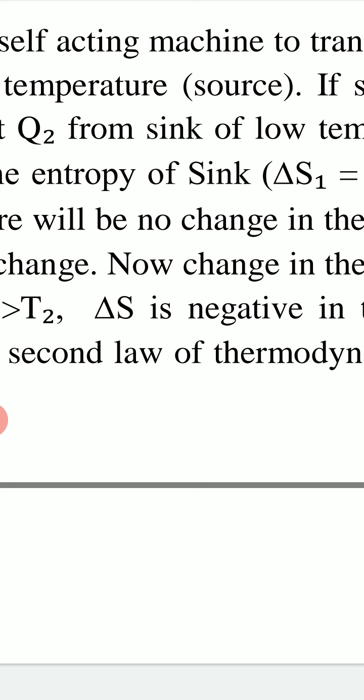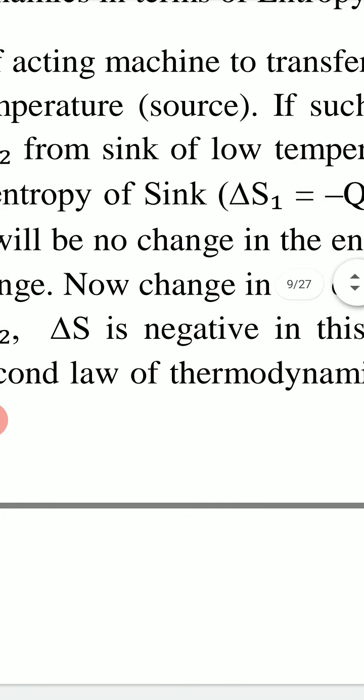If we assume the Clausius statement is wrong, such a machine is possible which extracts Q2 heat from a sink at low temperature T2 K and gives this Q2 heat to a source at high temperature T1 K, with no external work done on it. This means Q2 heat flows from the low-temperature sink to the high-temperature source without any external work.